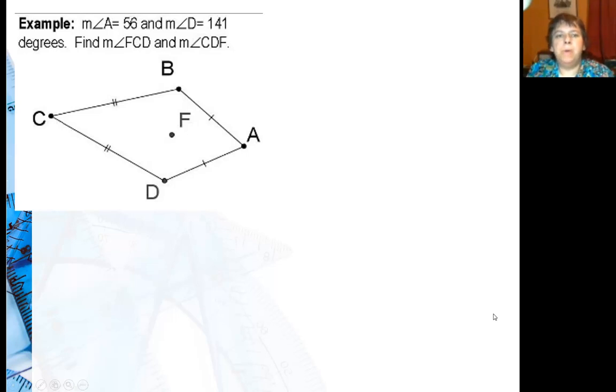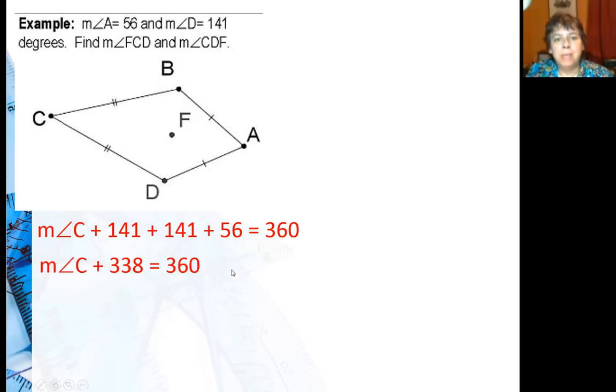Now we're going to solve a problem using diagonals and the right triangles created by those diagonals in a kite. So we have measure of angle A is 56 degrees. Measure of angle D is 141. So that means B is also going to be 141. So then I can find angle C. C plus 141 plus 141 plus 56 is 360 degrees. Adding 141 plus 141 plus 56 I get 338. Subtracting 338 from both sides I get 22 degrees.